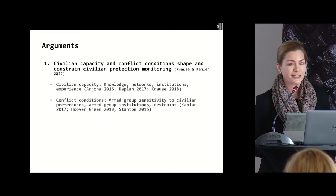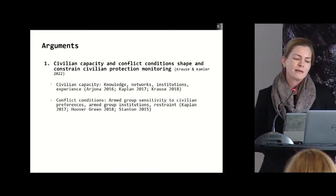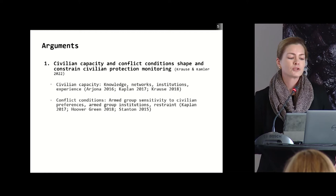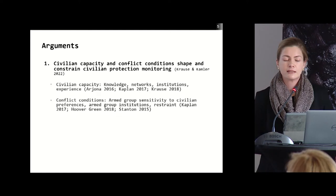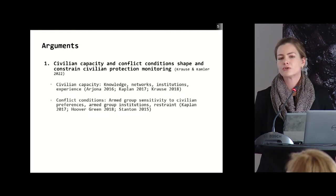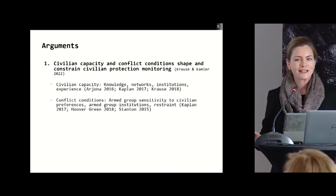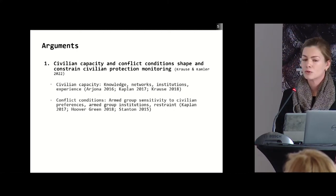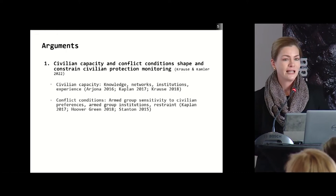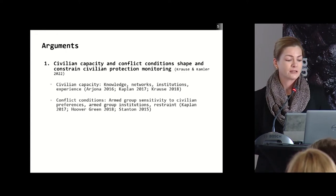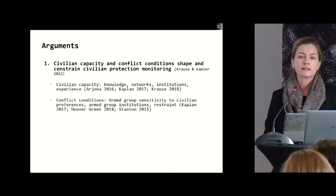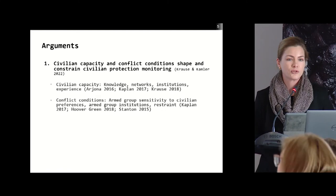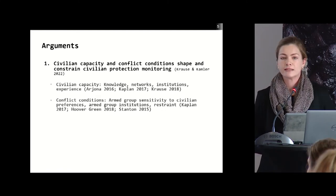By conflict conditions I mean the overall context — factors such as armed group sensitivity to civilian preferences, restraint among armed actors, and institutions to punish abuses of the civilian population. We know for a fact that in Myanmar the Myanmar army is not one that has institutionalized restraint against violence against civilians. On the contrary, it has been a highly abusive military, and Myanmar's counterinsurgency in the border zones has been extremely deadly for civilians.